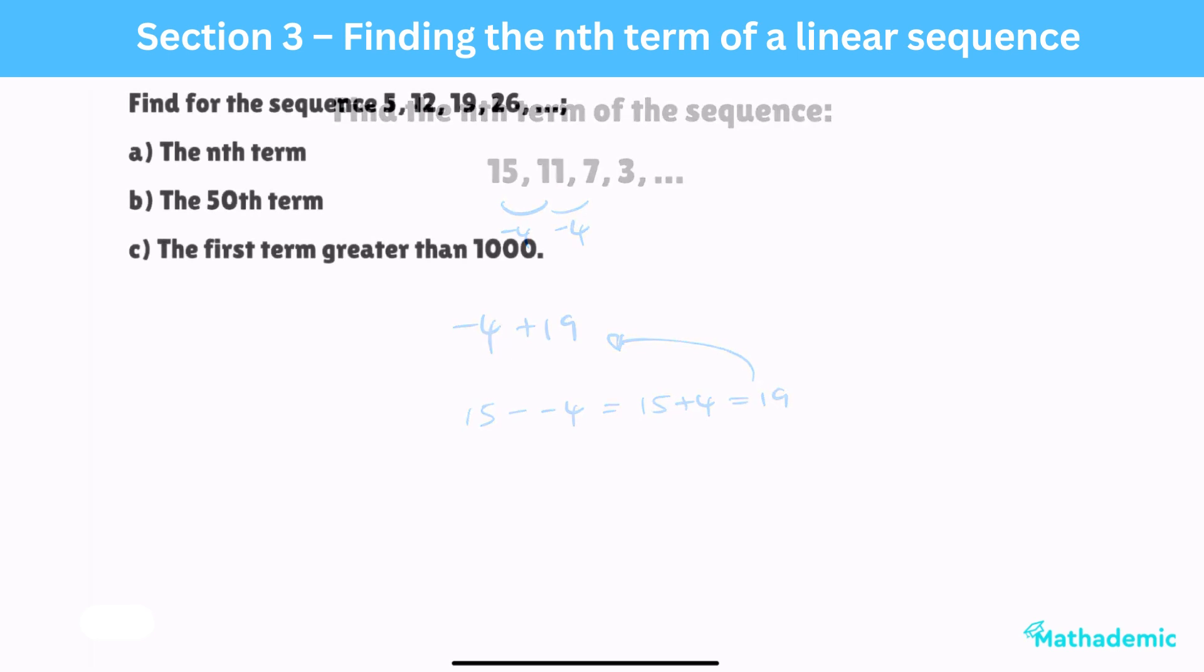For the sequence 5, 12, 19, 26, find a, the nth term, b, the 50th term, and c, the first term greater than 1000.